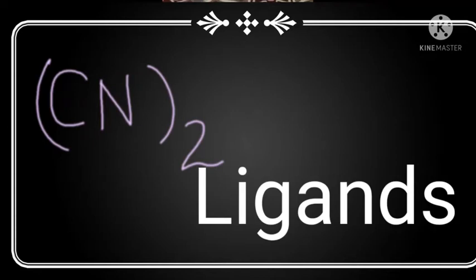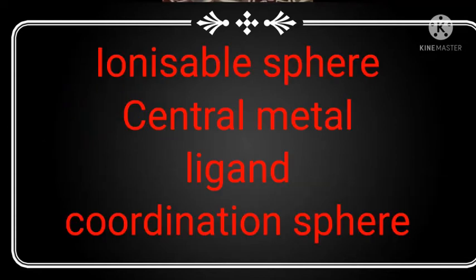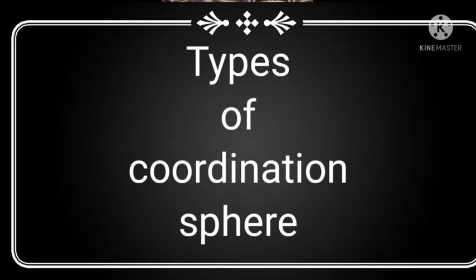Here we have covered four terms: ionizable sphere, central metal, ligand, and coordination sphere. Coordination sphere is of three types.